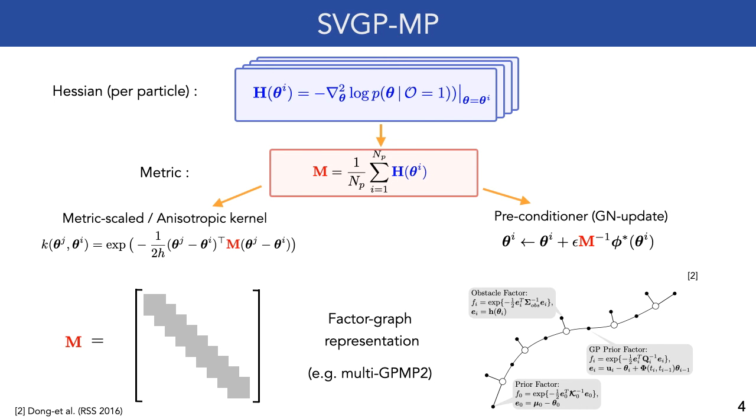As in GPMP2, the posterior distribution is represented as a factor graph, with local costs represented as individual unary or binary factors. As a result, the metric is sparse block diagonal and can be efficiently inverted for the update step.